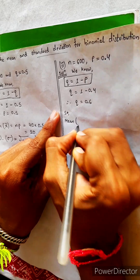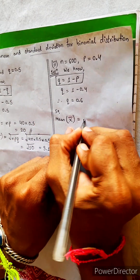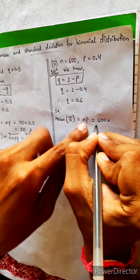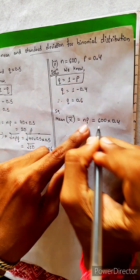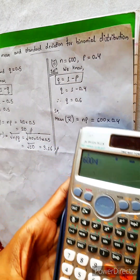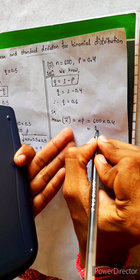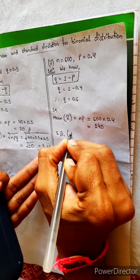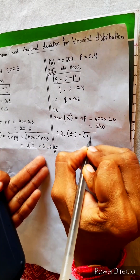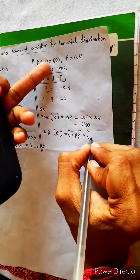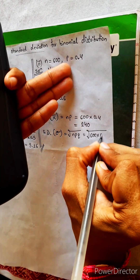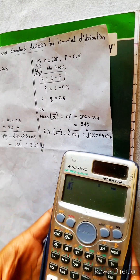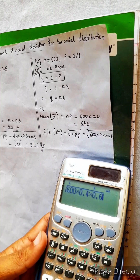Find mean. N is 600, P is 0.4. Mean equals NP: 600 into 0.4 equals 240. Now standard deviation — sigma equals under root NPQ. N is 600, P is 0.4, Q is 0.6. So 600 into 0.4 into 0.6 equals 144, and the answer is 12.